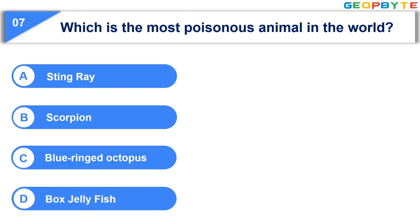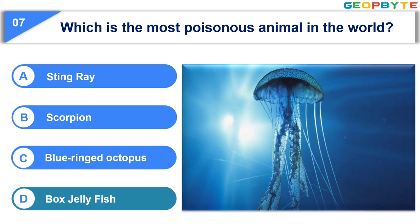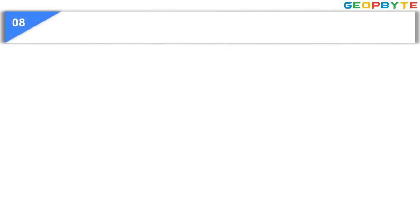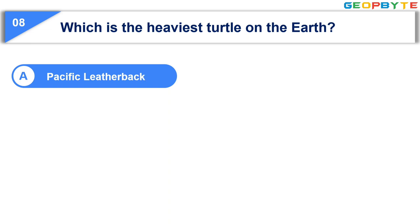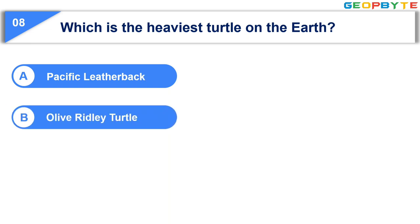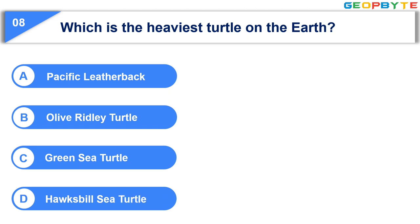Your time is up and the correct answer is Option D: Box Jellyfish. The eighth question is: Which is the heaviest turtle on the earth? Option A: Pacific leatherback. Option B: Olive Ridley turtle. Option C: Green sea turtle. Option D: Hawksbill sea turtle. Your time starts now.